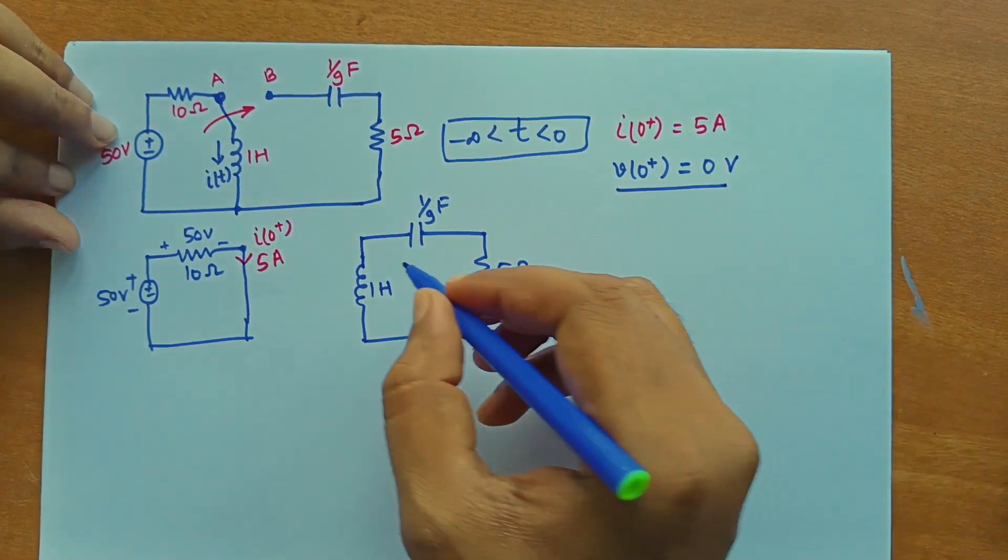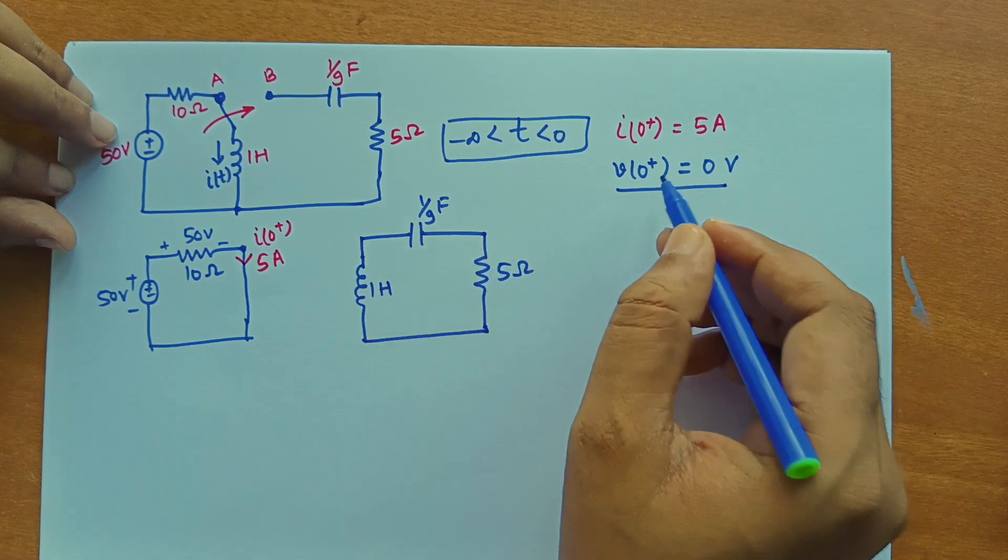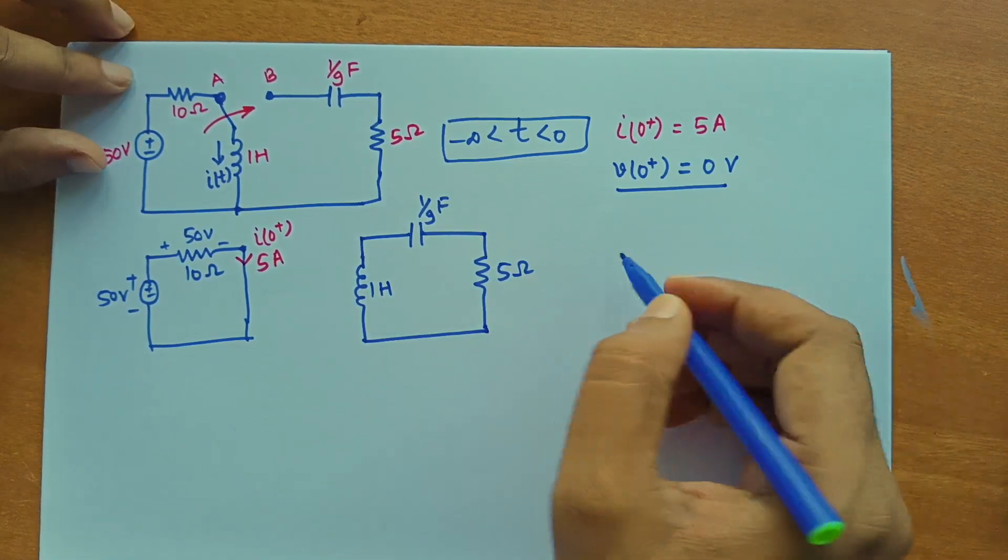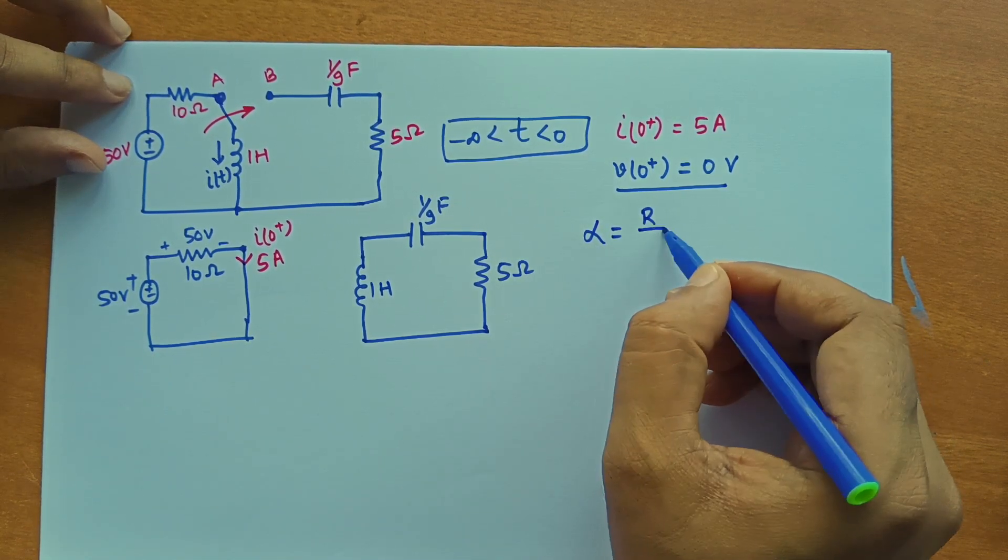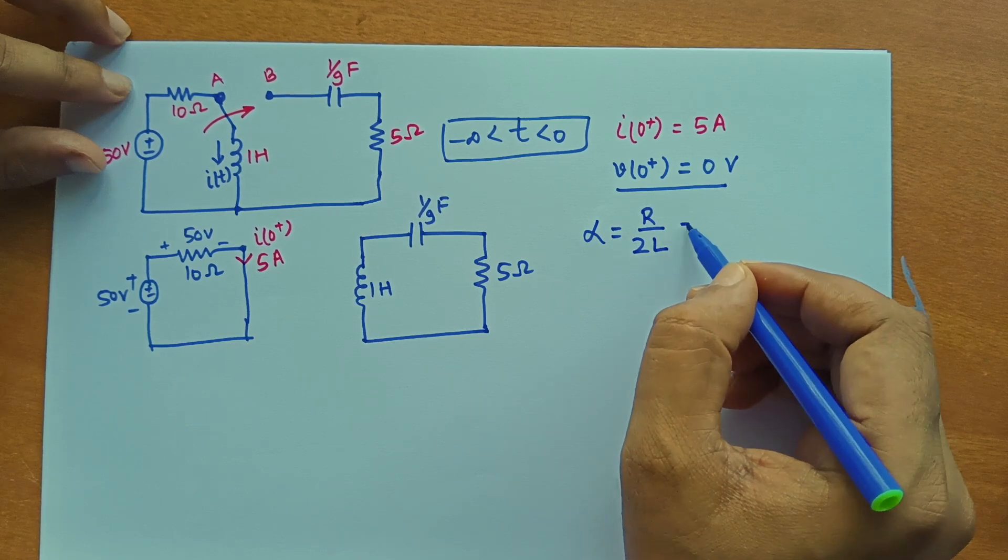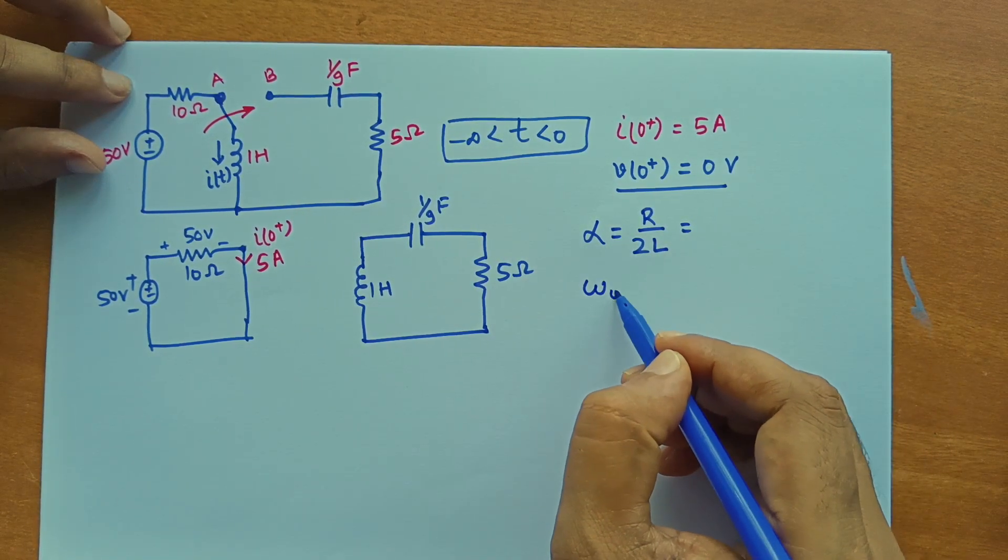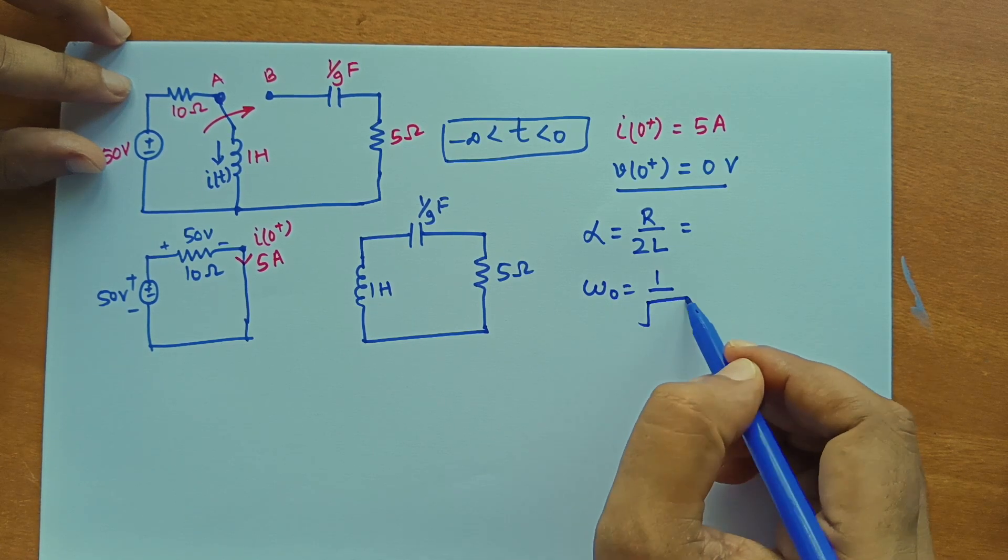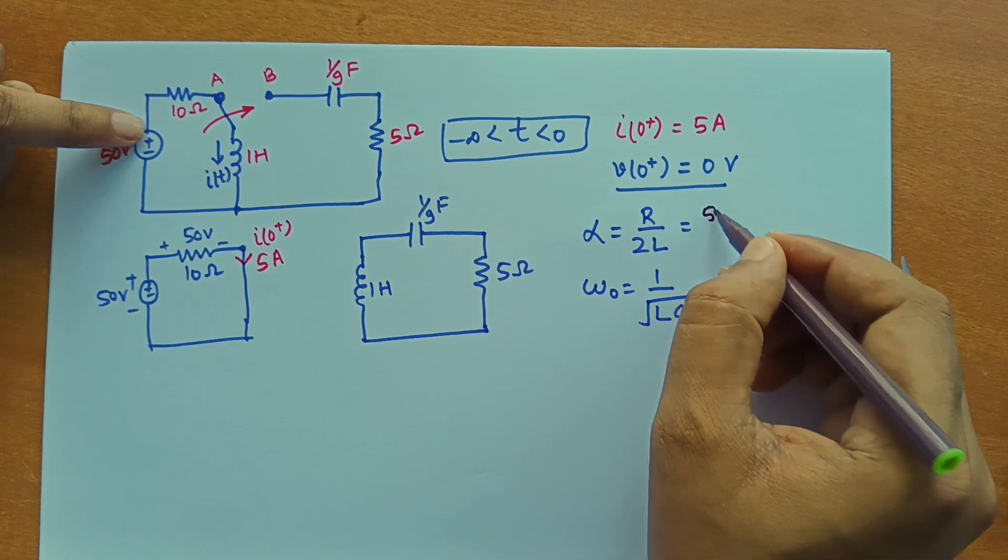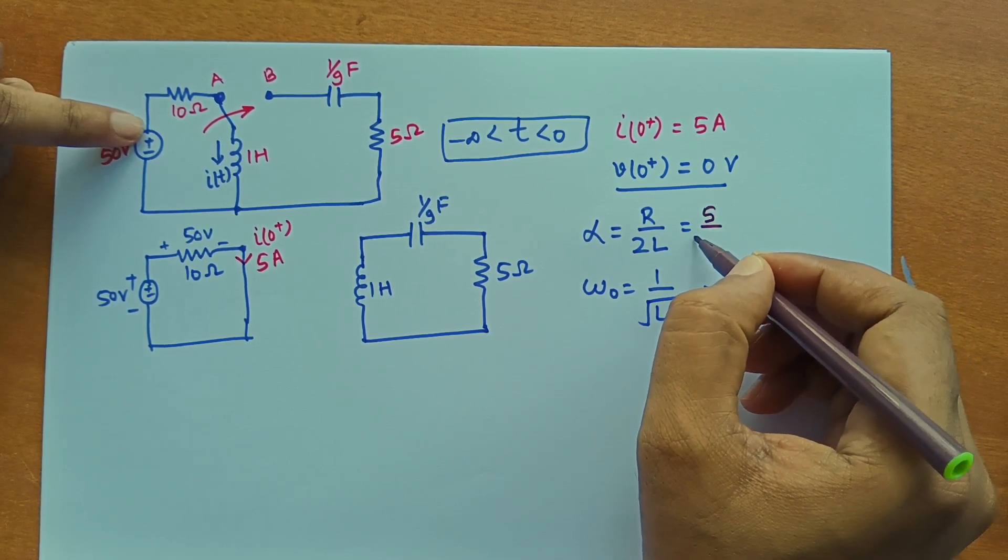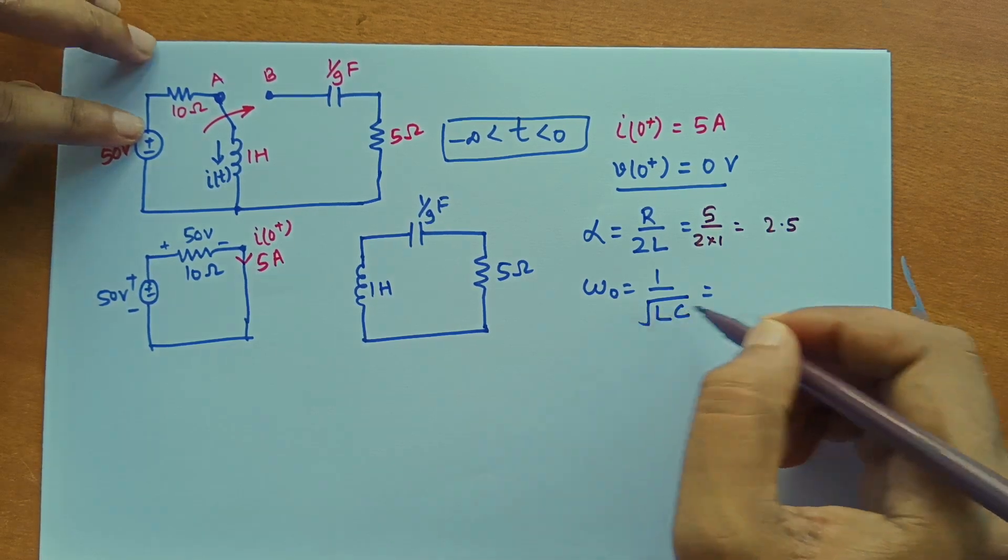Let's try to solve this. We have I0 plus V0 plus. Alpha we can calculate as R by 2L because it's a series RLC and omega 0 we can calculate using 1 by root LC. So the values will be so 5 divided by 2 into 1 is 2.5 and omega 0 is 1 by root LC.